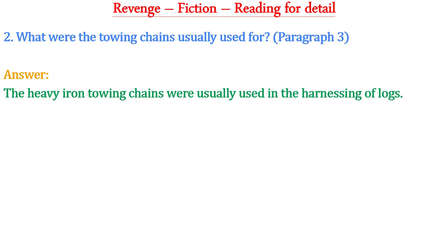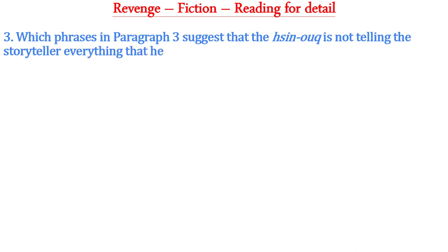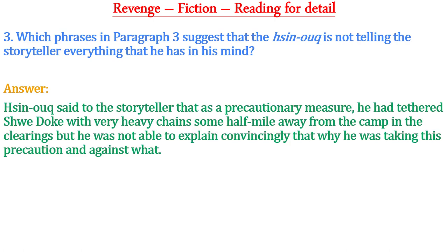Reading for detail, question two: What were the towing chains usually used for? From paragraph three: the heavy iron towing chains were usually used in the harnessing of logs. Question three: Which phrases in paragraph three suggest that the Shin Hawk is not telling the storyteller everything he has in mind? The answer is: Shin Hawk said that as a precautionary measure he had tethered Shuidok with very heavy chains half a mile away from the camp in the clearings, but he was not able to explain convincingly why he was taking this precaution and against what.